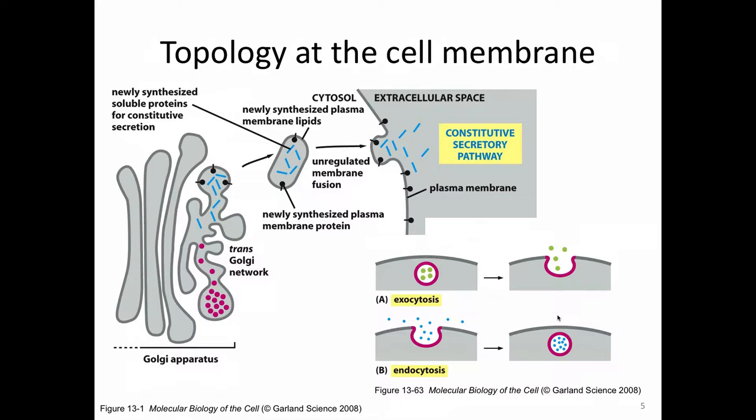When a vesicle fuses with the plasma membrane, it can release its cargo — a process called exocytosis or secretion. If cargo outside the cell is captured by the cell making a vesicle around it, that process is endocytosis. We'll also talk a bit about phagocytosis later. These are general cell biology concepts that will make it easier to think about MHC presentation.